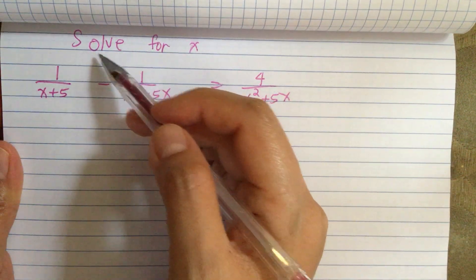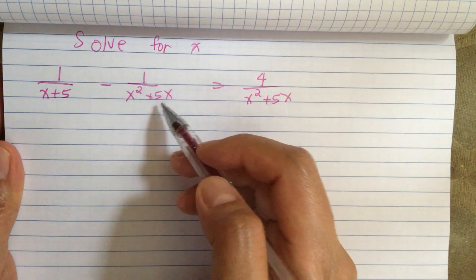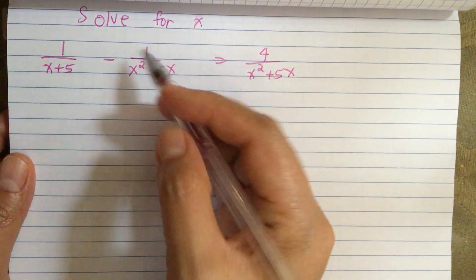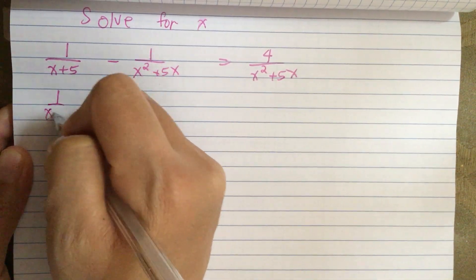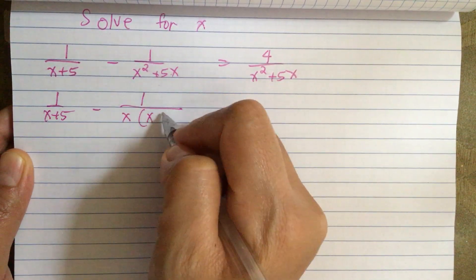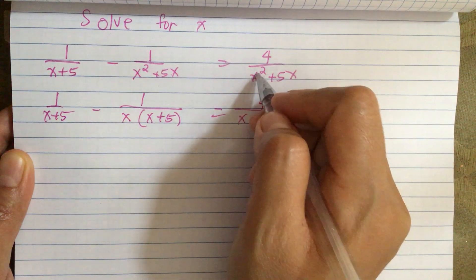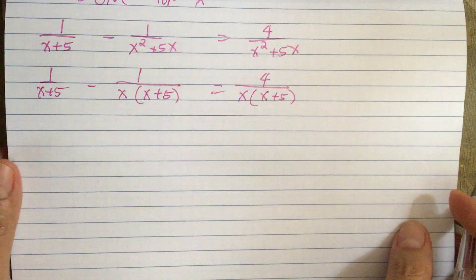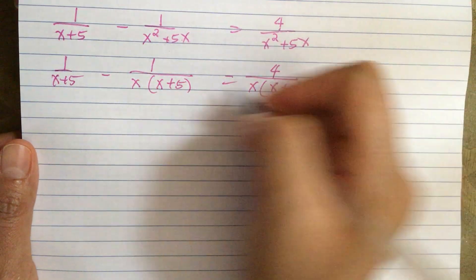We have another rational equation to solve: 1 over (x plus 5) minus 1 over (x squared plus 5x) is equal to 4 over (x squared plus 5x). Let's factor the denominator. We have 1 over (x plus 5) minus 1 over x(x plus 5), equal to 4 over x(x plus 5).